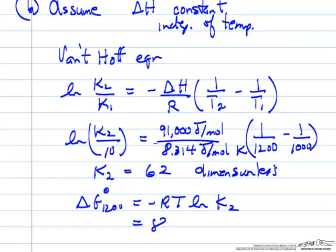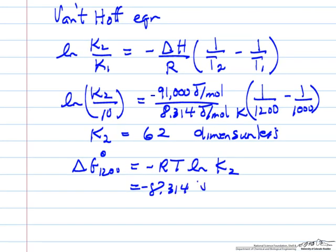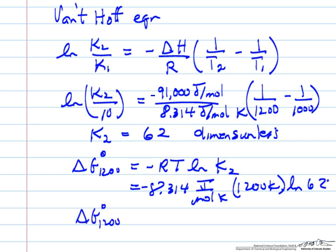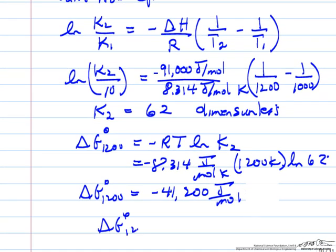which is minus the gas constant in joules per mole Kelvin, temperature of 1200 Kelvin, and the log of 62. So the Gibbs free energy change at standard conditions, minus 41,200 joules per mole. Or the Gibbs free energy change at standard condition, minus 41.2 kilojoules per mole.